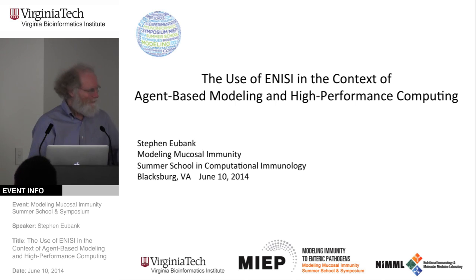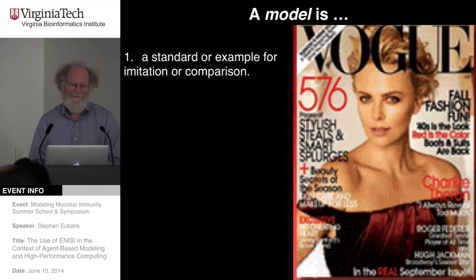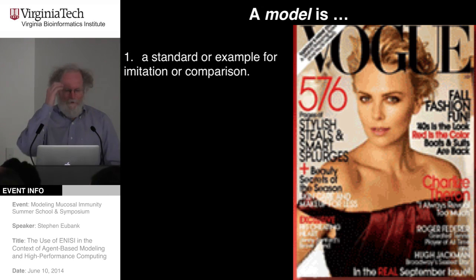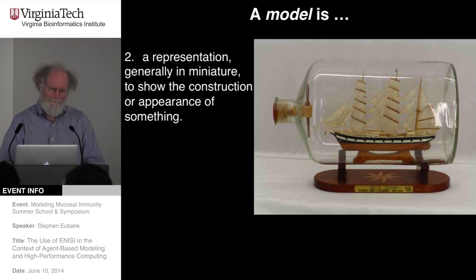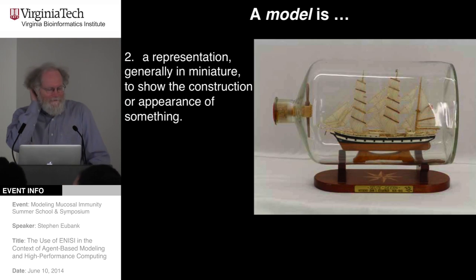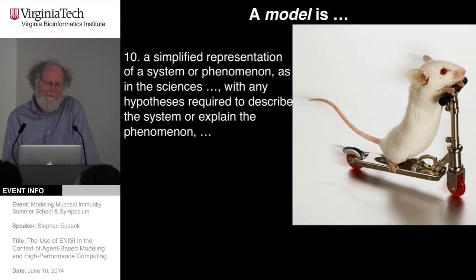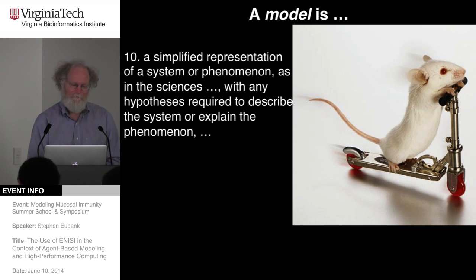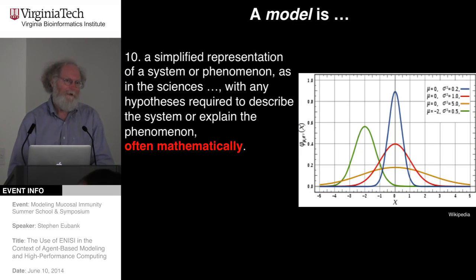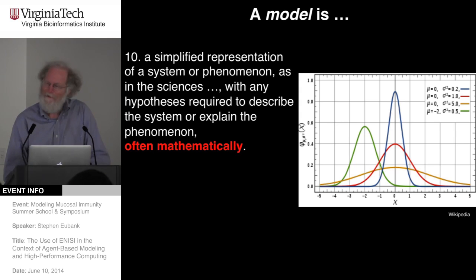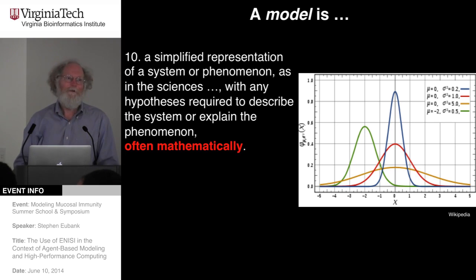Although we've heard one take on what a model is, I'm going to give you another. I went through the dictionary to look up definitions of models. This is not the kind of model we're particularly interested in — nor is this. I have to go down to number 10 to get 'a simplified representation of a system or phenomenon, as in the sciences.' This is the famous mouse model, but I'm going to talk about mathematical models. The graph here is absolutely meaningless — it's just a portrayal of something that looks vaguely mathematical.